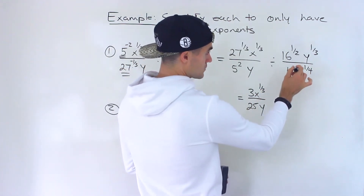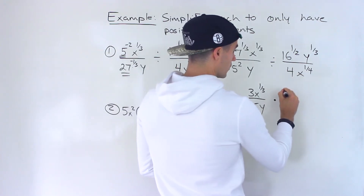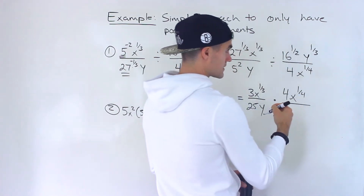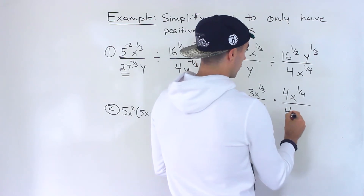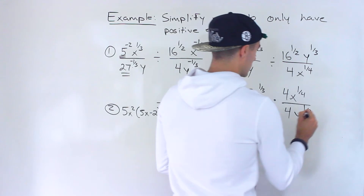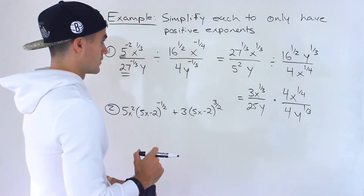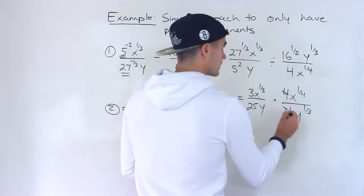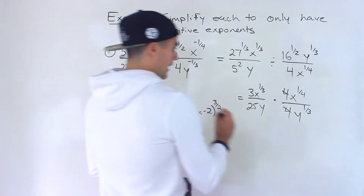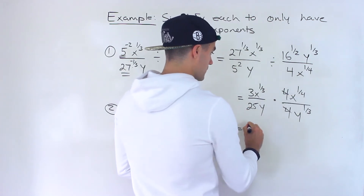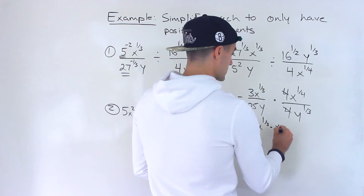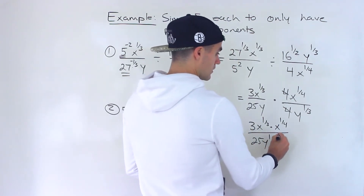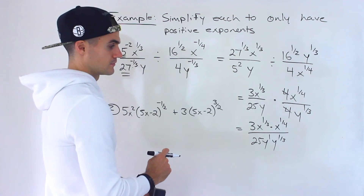We're dividing by a fraction, so what I'm going to do is flip the fraction and then we'll be multiplying. While flipping it, 16 to the power of a half — that's the square root of 16, which is just 4. And then the y to the power of 1 over 3 goes at the bottom. Notice that the 4s here cancel out, which is nice. Then we multiply the numerators and multiply the denominators, giving us 3 times x to the 1 over 3 times x to the power of 1 over 4, all over 25y to the power of 1 times y to the power of 1 over 3.